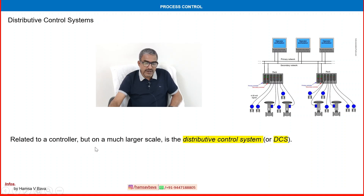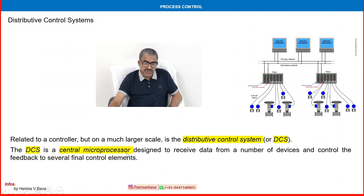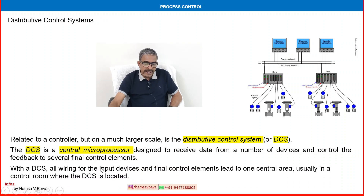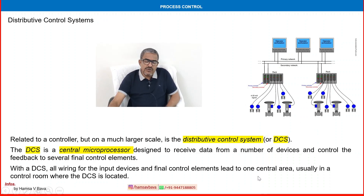Related to a controller but on a larger scale is the Distributed Control System, or DCS. The DCS is a central microprocessor designed to receive data from a number of devices — such as control valves, positioners, flow meters, sensors, and transmitters — and control the feedback to several final control elements. With the DCS, all wiring for input devices and final control elements leads to one central area, usually a control room where the DCS is located.